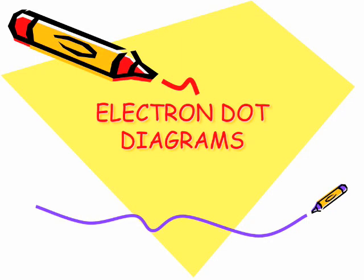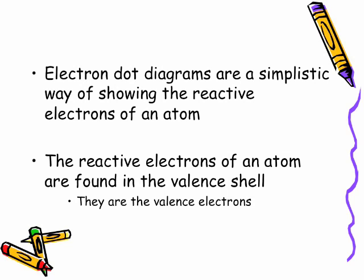Electron dot diagrams. Electron dot diagrams are a simplistic way of showing the reactive electrons of an atom. The reactive electrons of an atom are found in the valence shell. They are called the valence electrons.